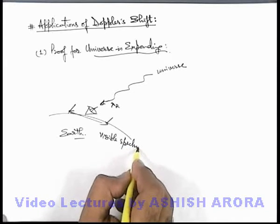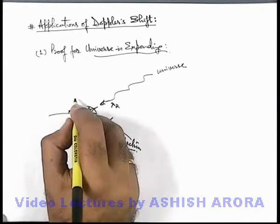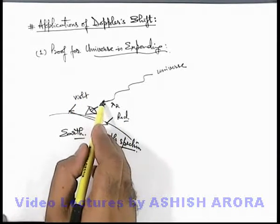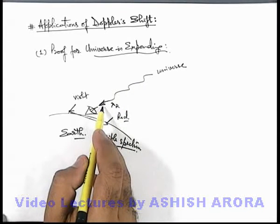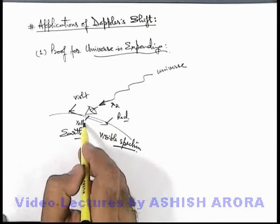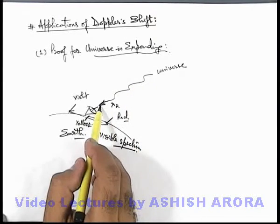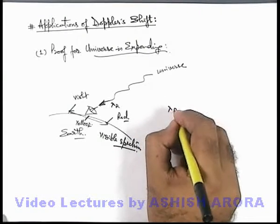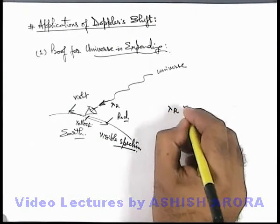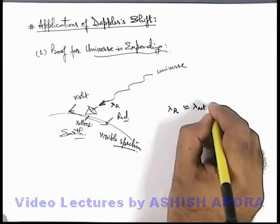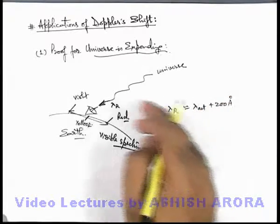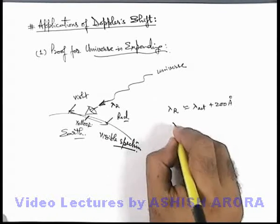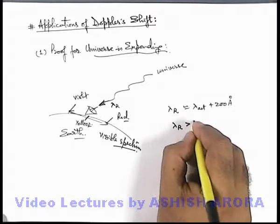The visible spectrum, we all know, varies from violet light to red light. By keeping the actual wavelength of light coming from the universe to be at mean wavelength — that is yellow light — and if we compare the approaching wavelength with the shift, it is generally observed that the receiving wavelength is approximately 200 Angstrom higher than the actual wavelength emitted from various heavenly bodies. I am just taking an average value, not exactly. So here we can see that the receiving wavelength is more than the actual wavelength.